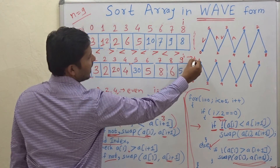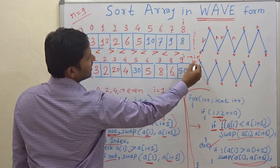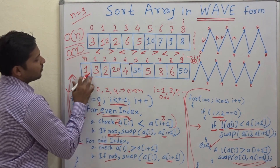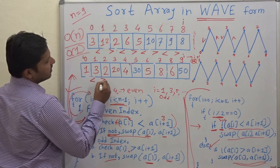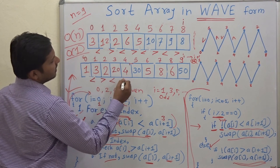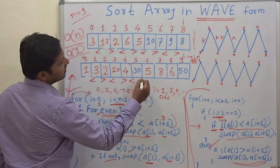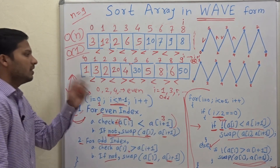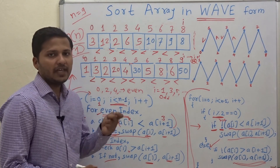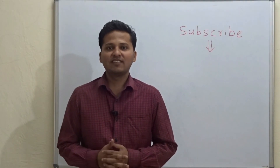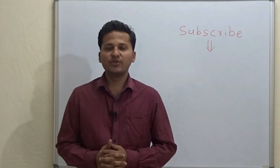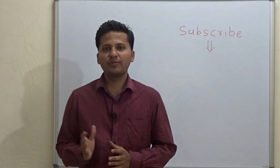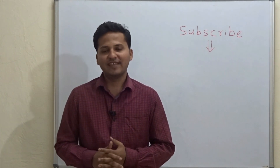We cannot check i with i+1 now because there is no 10th index. The array is now confirmed as waveform: 1 < 3 > 2 < 20 > 4 < 30 > 5 < 8 > 6 < 50. Yes, it is the waveform array. Please subscribe to my channel as I post algorithm videos every day, and if you want a video on any particular topic, mention it in the comments below.